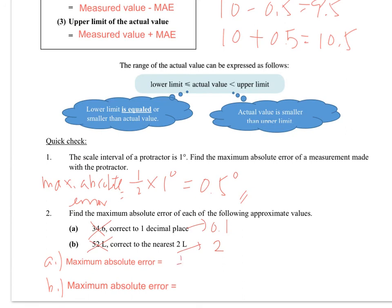So maximum absolute error would be 1 over 2 times our scale interval, 0.1. Maximum absolute error would be 1 over 2 times our scale interval, which is our 2. And we get 0.05, also 1. And the unit, this time, we will have L. Done.